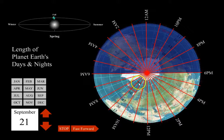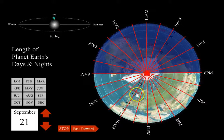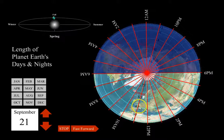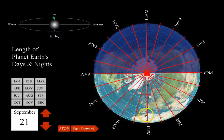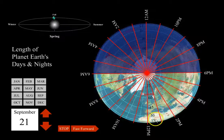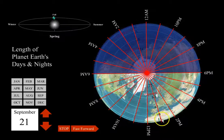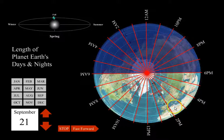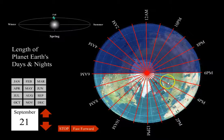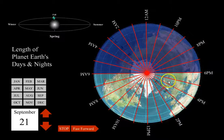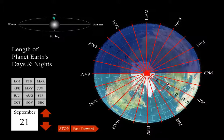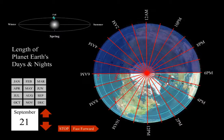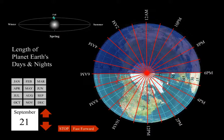75 degrees north, 60 degrees north, 45 degrees north, 30, 15. The outermost circle is the equator, and this dashed line over here is an important latitude — the Arctic Circle.